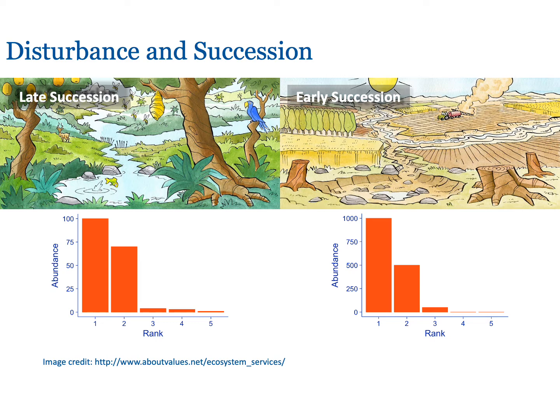We can understand the dynamics of disturbance and succession using the rank abundance distribution. The distribution on the left is the same as before, with a few common species. The species abundance distribution for early succession has one very common introduced plant, like wheat. A second moderately common plant may be another crop plant. Everything else, including the native plants, is exceedingly rare. There is a shift in the identity of the plants present. All of the mango trees in the late successional ecosystem have been removed. There is more disparity in plant abundance in the highly managed and manipulated system.